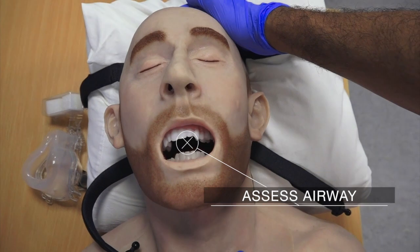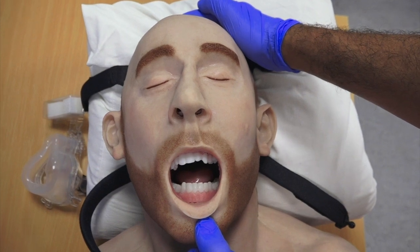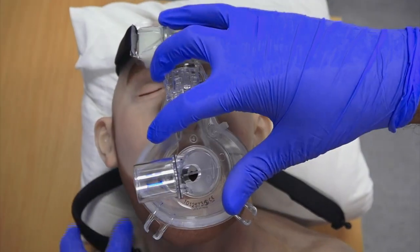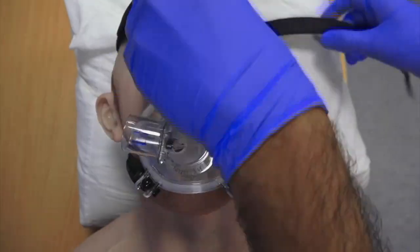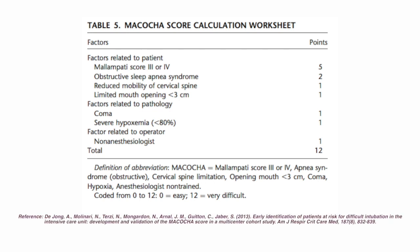Assess the patient's airway to predict difficulty of intubation. Perform Mallampati scoring. The Makocha score is the only validated tool for assessing difficulty of intubation outside of the operating theatre. It considers factors related to the patient, factors related to pathology, and factors related to the operator. Points are assigned if any of these conditions are present. The score is summated to produce a number between 0 and 12; a number close to 0 predicts easy intubation, and a number close to 12 predicts very difficult intubation.